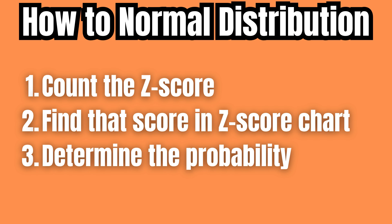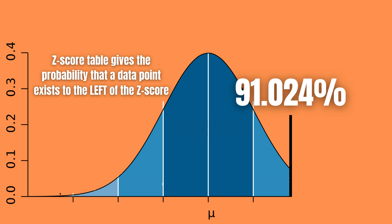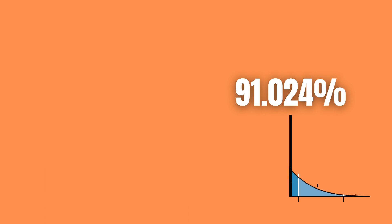This means that we can calculate the probability that someone would be taller than me, i.e., that the data point would exist to the right of the z-score, by subtracting this 91.924 percent from 100 percent, because this is just how probabilities work.